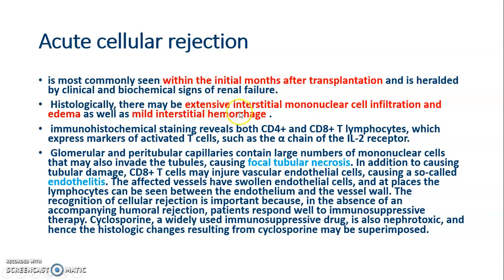Histologically in acute cellular rejection, there is extensive interstitial mononuclear cell infiltration, edema, and interstitial hemorrhage. Immunohistochemical stains reveal CD4 and CD8 T cells expressing markers of activated T cells. Glomerular and peritubular capillaries contain large numbers of mononuclear cells that invade the tubules causing focal tubular necrosis and endothelitis.